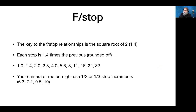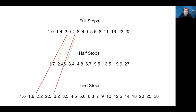The key to f-stops is the square root of 2, or 1.4. Each stop in the progression is 1.4 times the previous, rounded off. The standard progression is: 1, 1.4, 2.0, 2.8, 4, 5.6, 8, 11, 16, 22, 32, and on. Your camera meter might use half or third-stop increments like f6.3 or f7.1 — these just fall in between the main numbers. The top line lists full stops, then half stops, then third stops that go between the full stops.